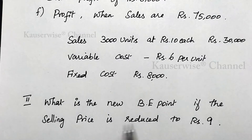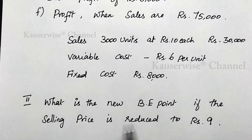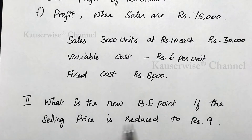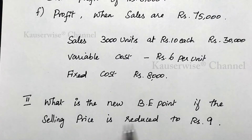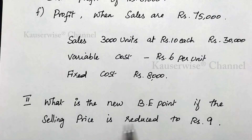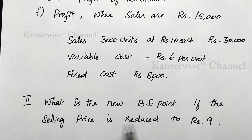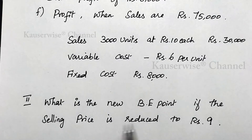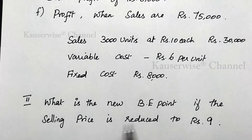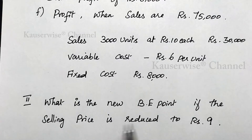The first component is PV ratio, that is profit volume ratio. What is the formula? Contribution divided by sales, into 100. Contribution is Rs. 12,000 and sales is Rs. 30,000. So: 12,000 divided by 30,000 into 100 = 40%. This is the PV ratio.